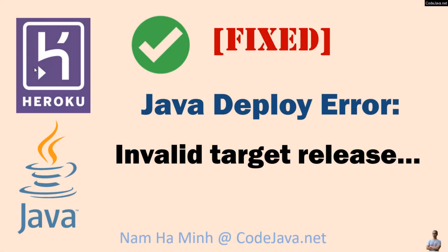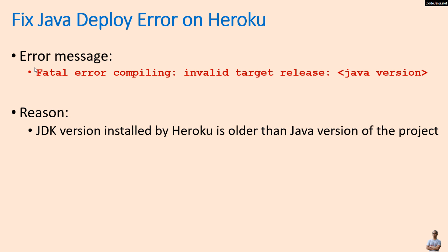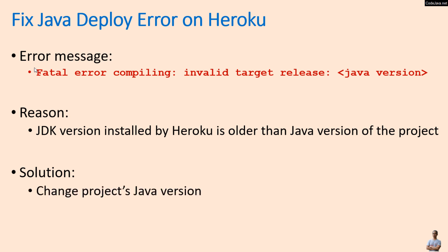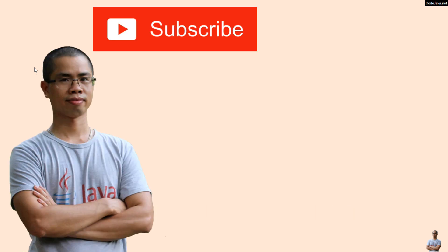So, I have shared with you two solutions to fix the Java deploy error on Heroku — invalid target release. The reason is that the JDK version installed by Heroku is older than the Java version of the project. You can apply one of two solutions: change the project's Java version, or change the JDK version installed by Heroku. I hope you found this video helpful. Please subscribe to my channel, like, comment, and share this video. Thanks for watching!